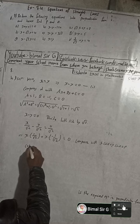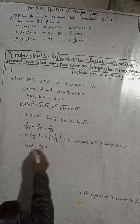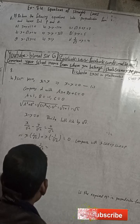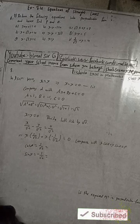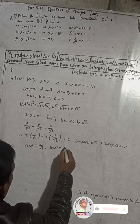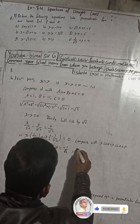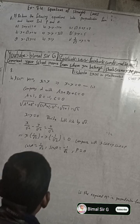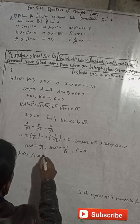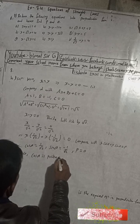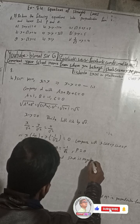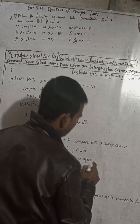So from the comparison, cos α is equal to 1 by root 2, and sin α is equal to minus 1 by root 2. Also, p is equal to 0.